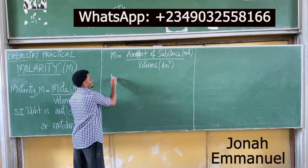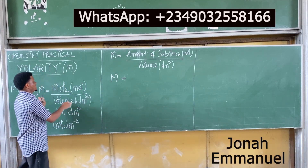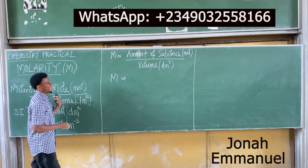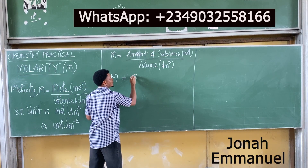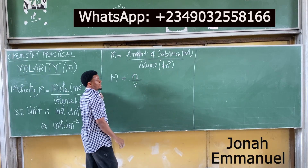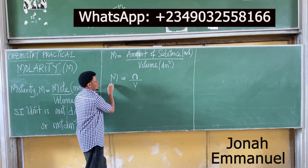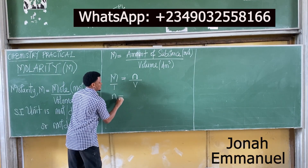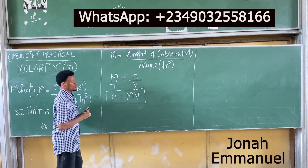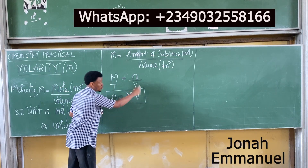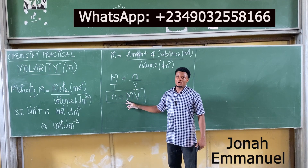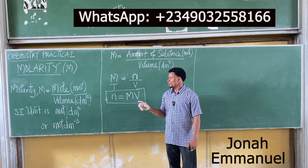Molarity M is equal to N over V, where N represents the number of mols and V is volume. If we cross-multiply, N equals M times V — that is, the number of mols is equal to the product of molarity and volume. Please take this down; it is very important.